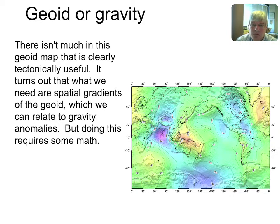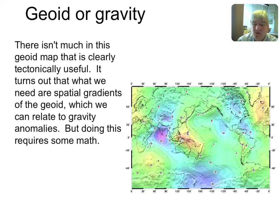This geoid map doesn't have much in it that looks like plate tectonics. The reason is that it isn't really the geoid we want if we want to do tectonics with altimetry. What we need are spatial gradients of the geoid, and we can relate those to gravity anomalies. Doing this requires a little math.